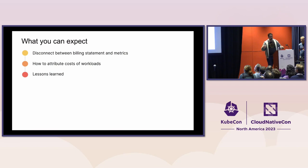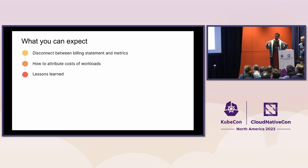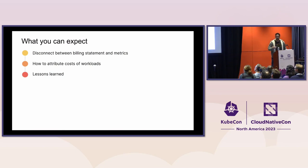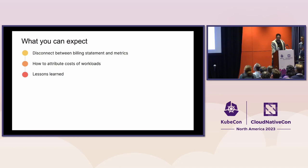So what can you expect today? First, we're going to show a couple of approaches that we use at Grafana Labs to help bridge the disconnect between your billing statement and the metrics you're already collecting in your Kubernetes cluster. After that, we're going to step through some PromQL examples to help measure — in this case, we're going to show CPU because that's usually the most costly. And finally, we're going to share lessons learned, both in terms of setting this up and measuring it, and also how we helped improve that cost.